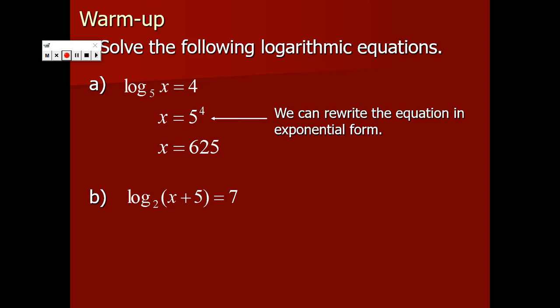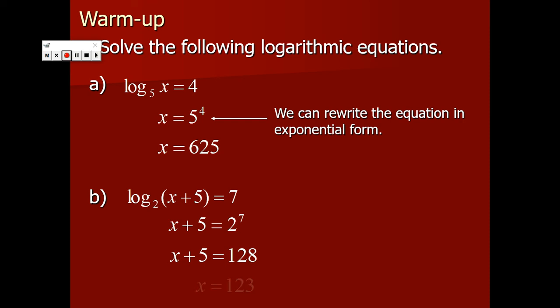Log base 2 of x plus 5 equals 7. We can see the plus 5 in there, and I'm going to have to subtract 5 at some point, but that's not the first move. The first move is to peel back this log base 2. The inverse of log base 2 is 2 to the power of. So you get 2 to the power of 7, which is 128, and then you subtract the 5 off and you get 123.